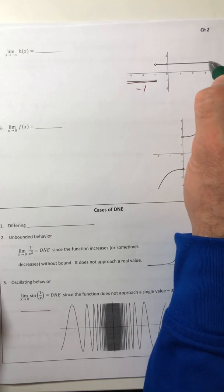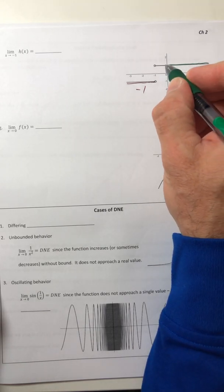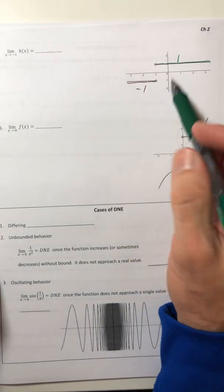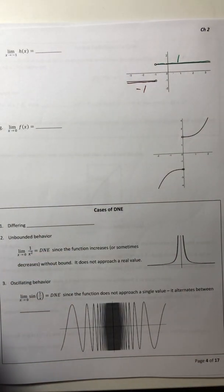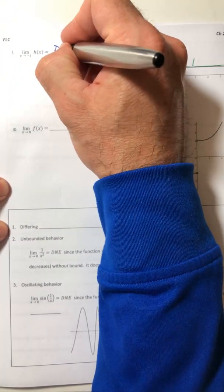And over here on the right side as X approaches negative 1, it's approaching something different. It's approaching positive 1. So we did not get the same value. So when that happens, if they're different just like it was for a table, the limit does not exist.